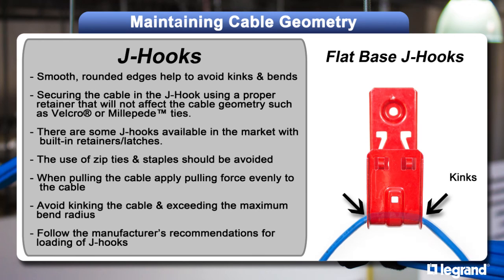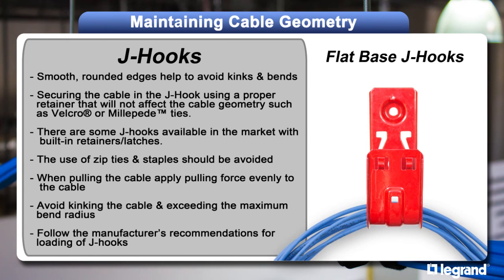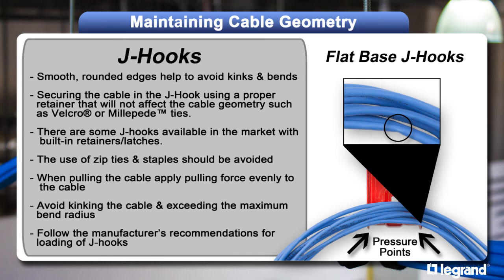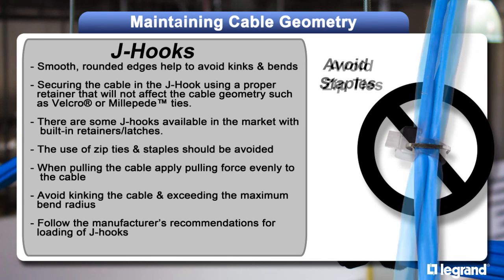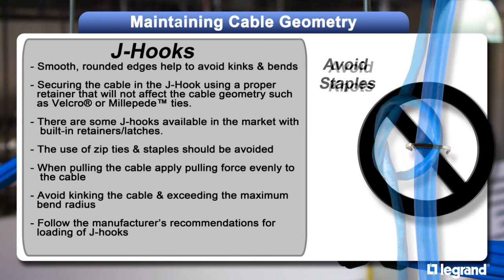A flat-based hook can create pressure points that can change the geometry of the cable. This is easier to see with a single cable versus a bundle of cables, but the pressure point is always there. When you bundle cable together, they have an inherent stiffness that tends to prevent tight turns, but not these pressure points. Avoid situations that tend to kink or change the geometry of the cable, such as tightly cinched cable ties, staples, or knots.